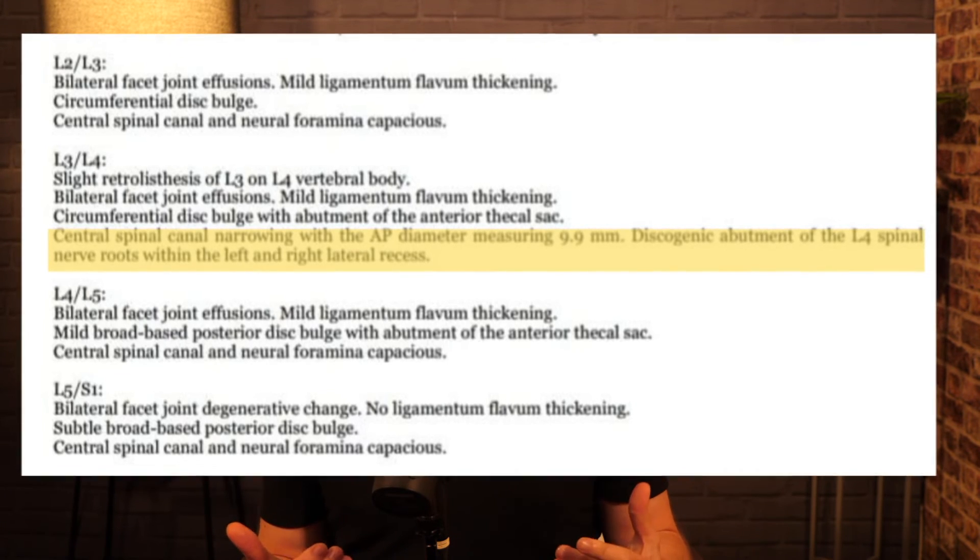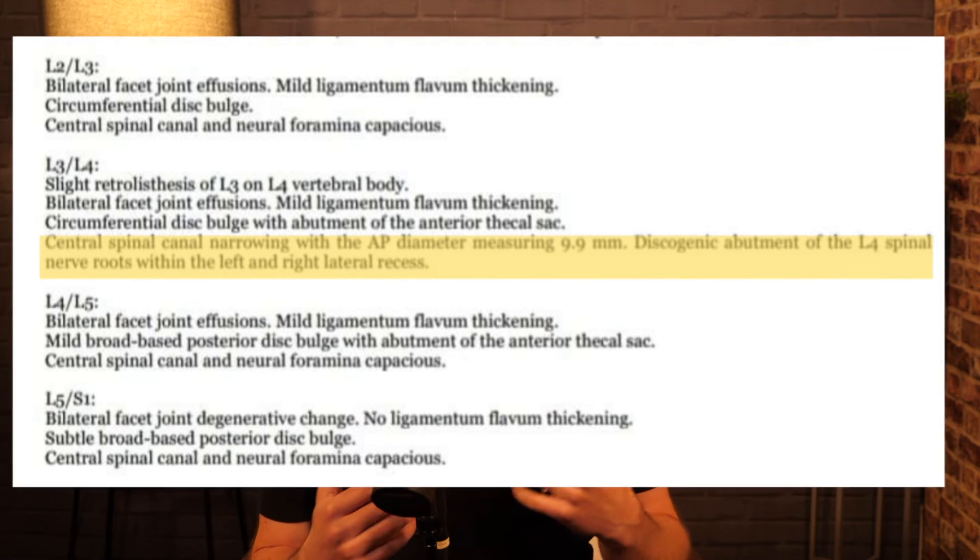We also have discogenic abutment of the L4 spinal nerve roots within the left and right lateral recess. We want to match these structural changes with the clinical history and physical examination. Does this person have any leg pain? Do they have loss or change of sensation over the L4 nerve root dermatome? Do they have evidence of foot drop — a weakness of the tibialis anterior muscle shown on screen here? Is it bilateral, since the abutment is bilateral? If none of these symptoms are present and sensation, reflexes, and muscle strength tests are all negative, then this is most likely another incidental finding. This is why history and examination are so important.